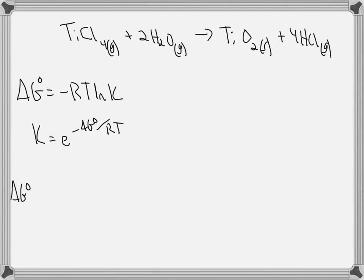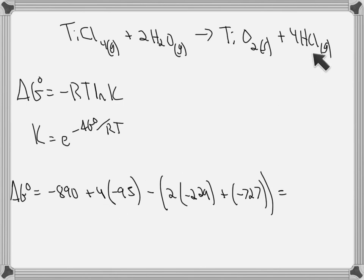Delta G standard can be calculated by, again, hunting down the data. We need to figure out what delta G of formation is for TiO2 and so forth. Four times that for HCl, and then minus the two times delta G formation for H2O gas, and then that for TiCl4, and we get negative 85 kilojoules.